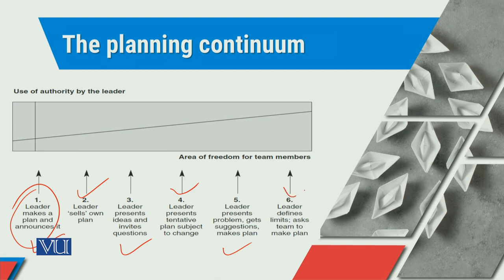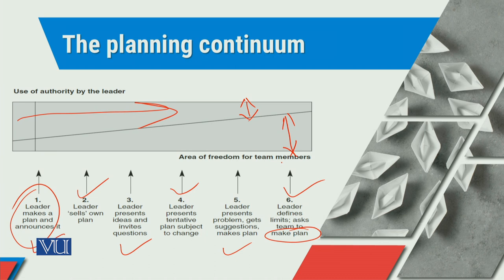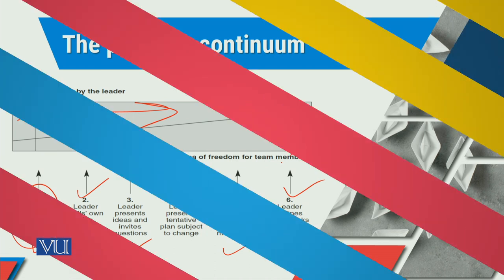Isi tarha, next level ke oopper, the leader defines the limits, asks team to make a plan. Abh yehaan par saray ka saray jo plan hai, that is presented and driven by the team orientation. Isi baad ko, hum is diagrammatic format mein bhi dekh rahe hai ke with the passage of time, the use of authority by the leader is getting less and the freedom for the team member is getting more. So that is a very important phenomena which we have to think about.